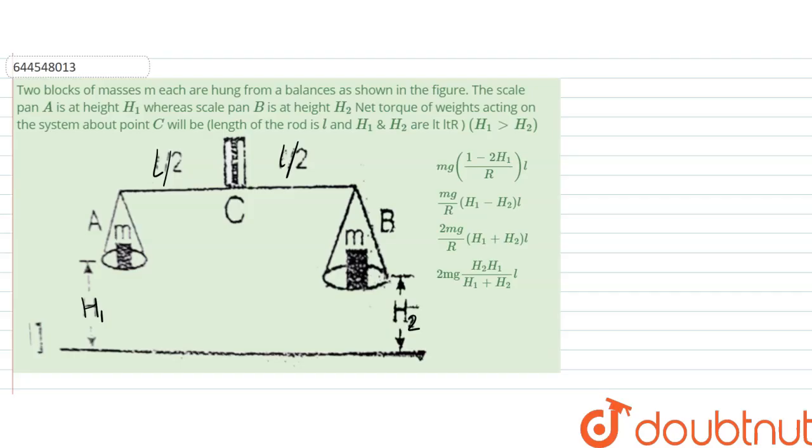Hello, we are given with a question and the question says two blocks of masses M each hung from a balance as shown in the figure. The scale pan A is at height H1 whereas scale pan B is at height H2.